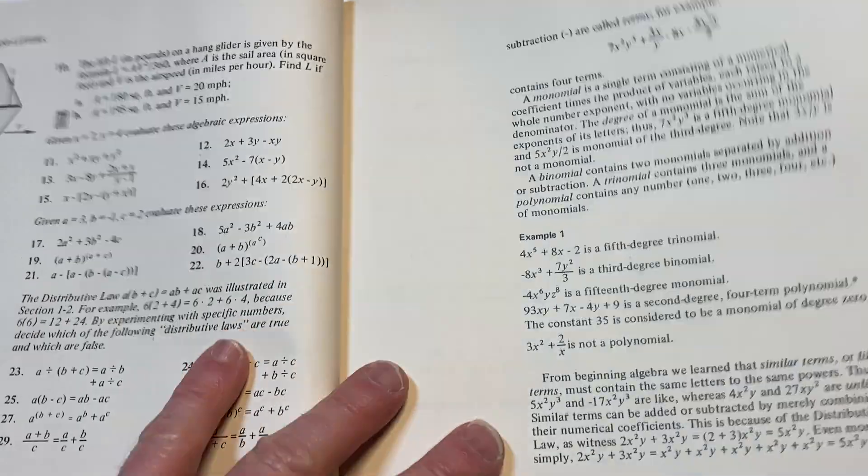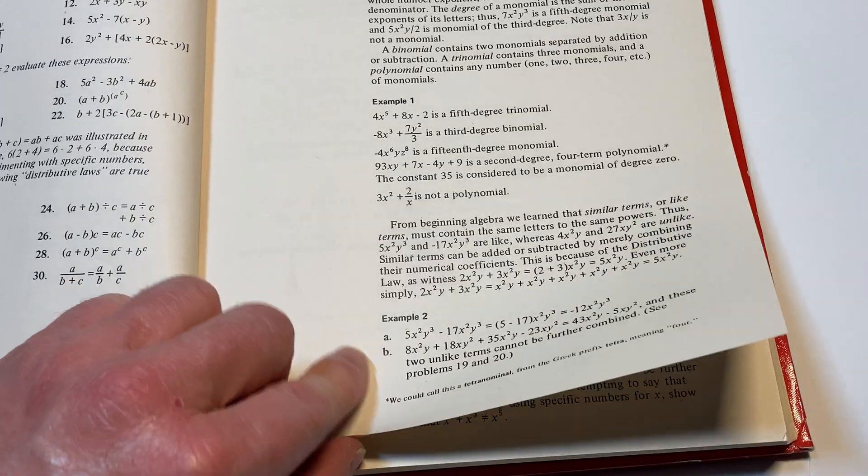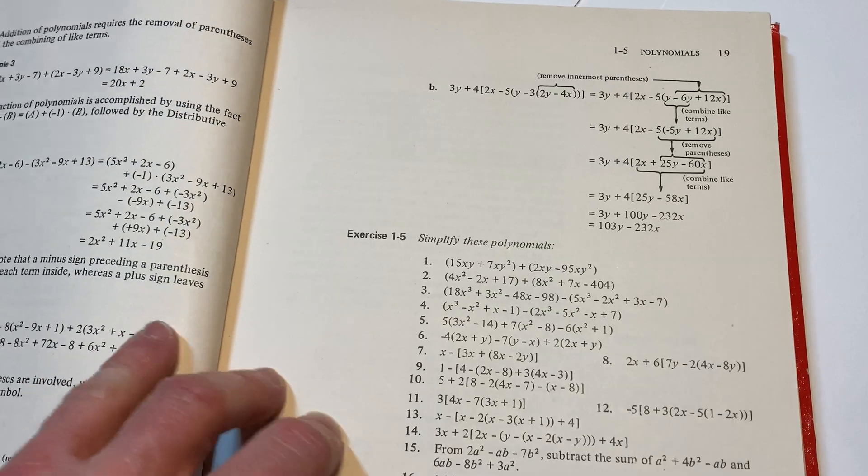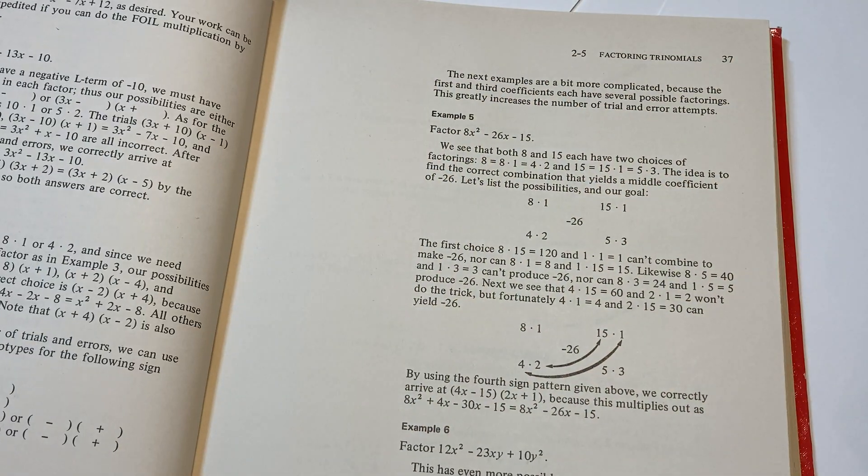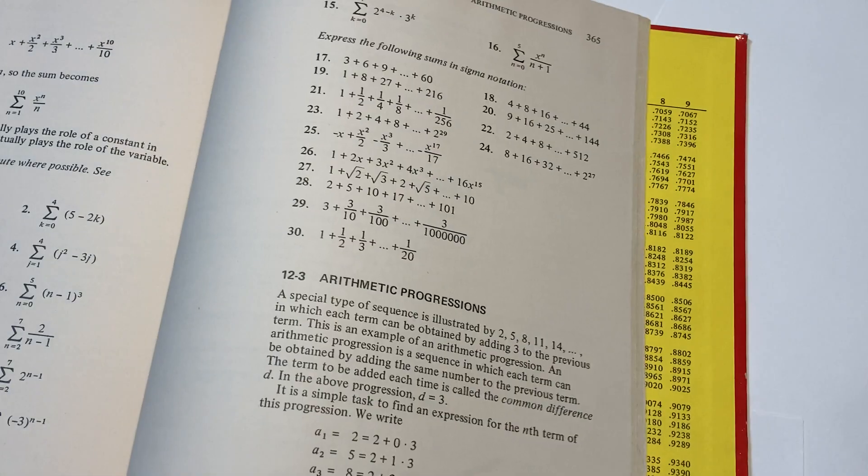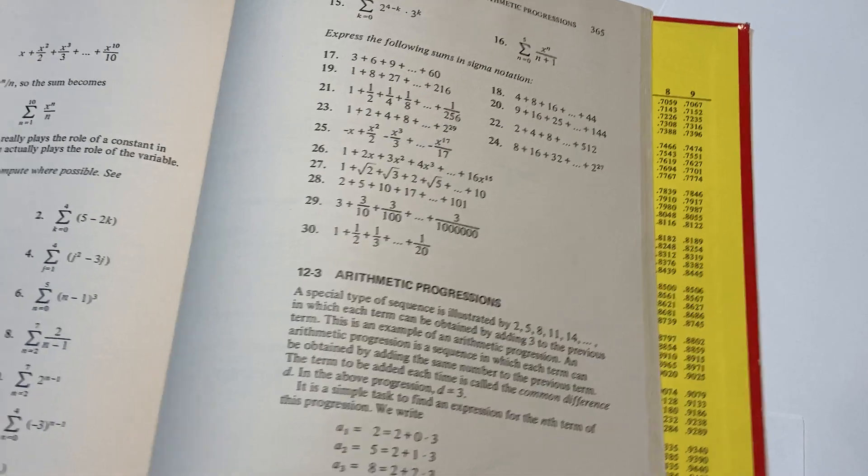It also has a lot of examples, as you can see here. So, I mean, look, it's got an example here, an example here is example two, and it's multiple parts. Example three, example four, example five, example six, and then it goes straight to the exercises. So, it's straight to the point. No nonsense. Good way to get started with algebra. Yeah. It's pretty cool. Pretty cool.